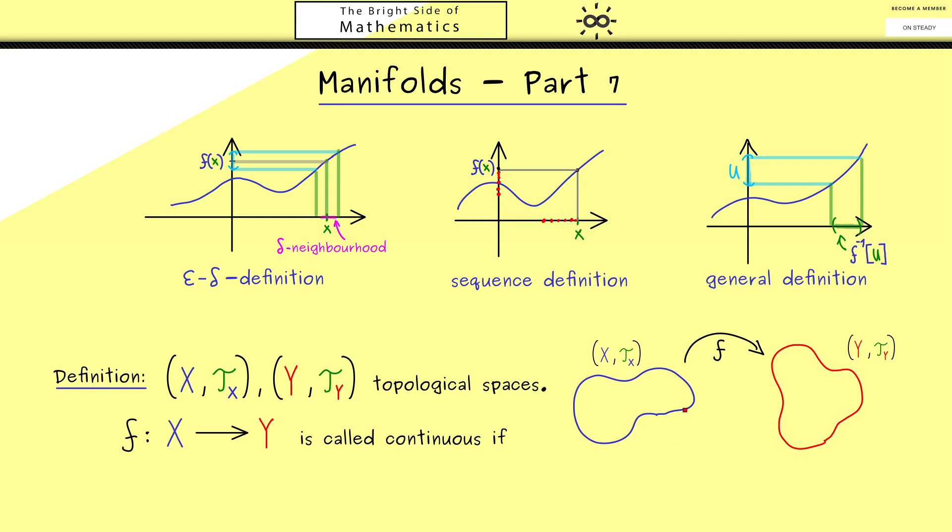So visually speaking, this means here on the left hand side when we have points that are close, then the map f should map them to points that are also close. However, in general we don't have a metric to measure this closeness, therefore we immediately take the open sets.